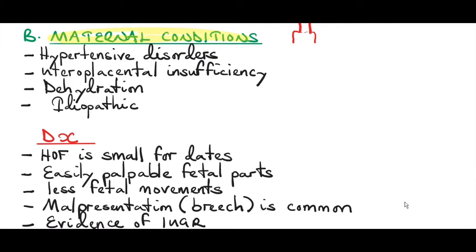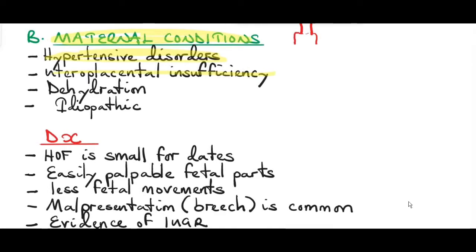Maternal conditions that cause oligohydramnios include hypertensive disorders. Hypertension results in uteroplacental insufficiency — reduced blood flow to the placenta and through the umbilical cord — causing reduced blood flow to the fetus, reduced fetal urine output, and reduced amniotic fluid. Maternal dehydration also reduces maternal blood volume, which reduces blood volume going to the fetus, resulting in reduced fetal urine output and reduced amniotic fluid.